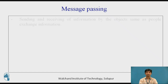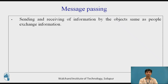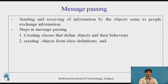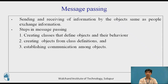Message passing is nothing but the sending and receiving of information by objects, the same way as people exchange information. An object-oriented program consists of a set of objects that communicate with each other. The process of programming in an object-oriented language involves: (1) creating classes that define objects and their behavior, (2) creating objects from class definitions, and (3) establishing communication among objects. Objects communicate with one another by sending and receiving information, much the same way as people pass messages to one another.